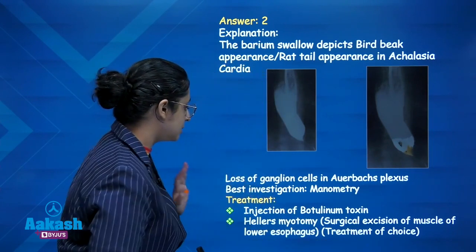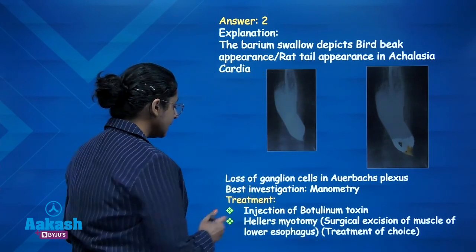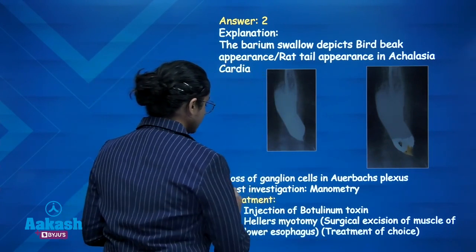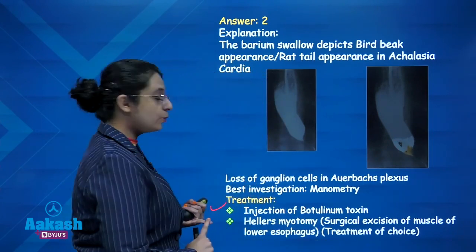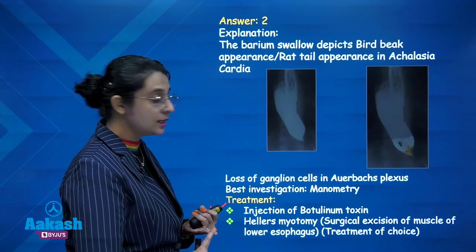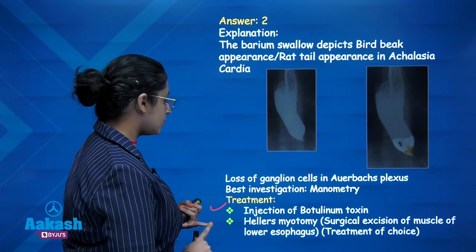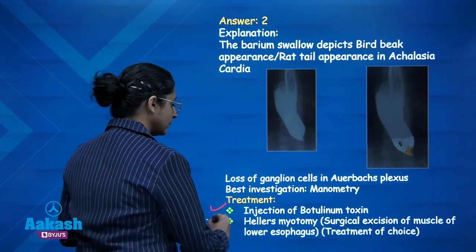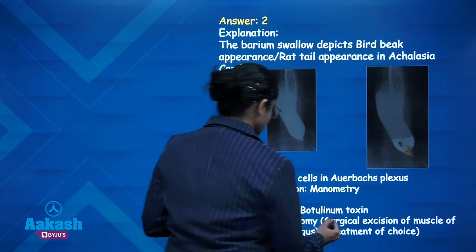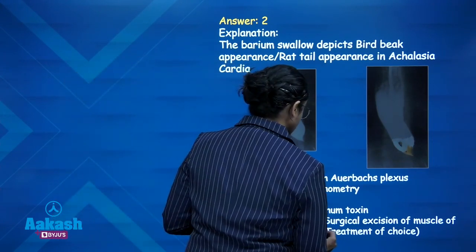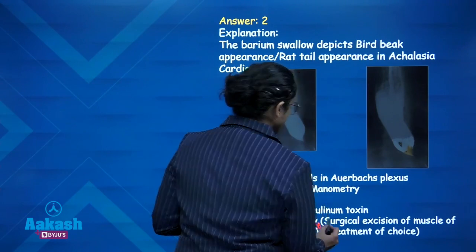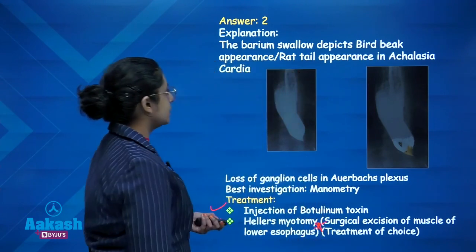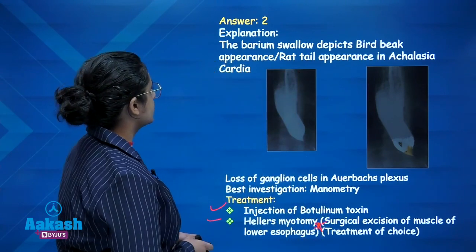The best investigation for achalasia cardia is manometry. Treatment options include injection of botulinum toxin in order to cause relaxation, and Heller's myotomy — surgical incision of the lower esophageal sphincter — which is the treatment of choice.